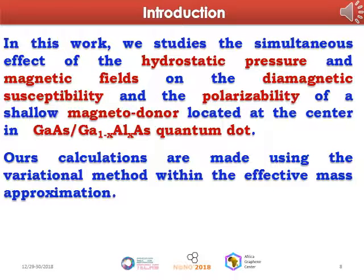In this work, we will study the simultaneous effects of hydrostatic pressure and magnetic field on the diamagnetic susceptibility and the polarizability of a shallow magnetodonor located at the center of a GaAs quantum dot. Our calculations are made using the variational method within the effective mass approximation.